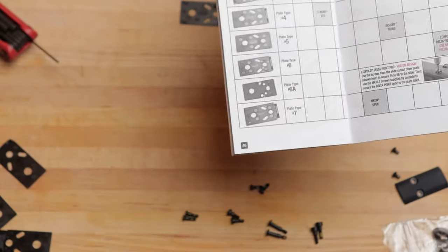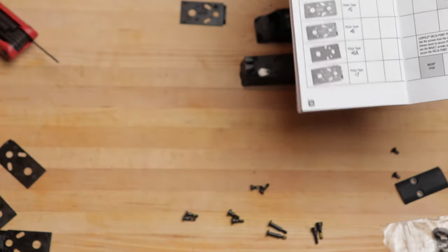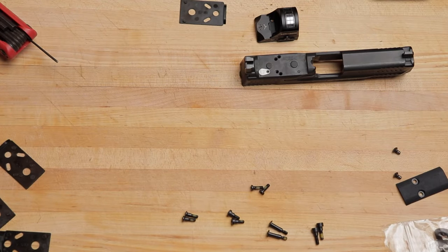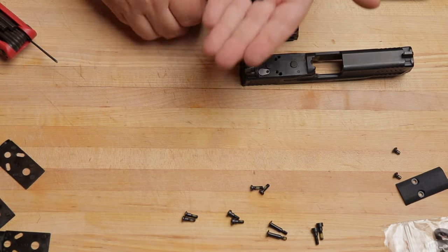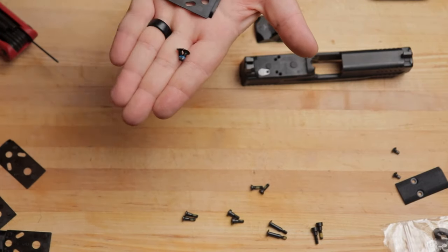So, I already took them out of the box. I use the screws that come with the red dot, in my case. And there you have it. That is how you find out what screws and what plates go to your optic.